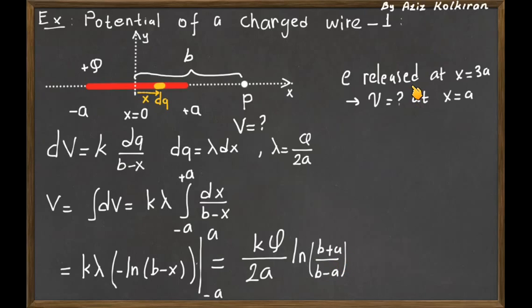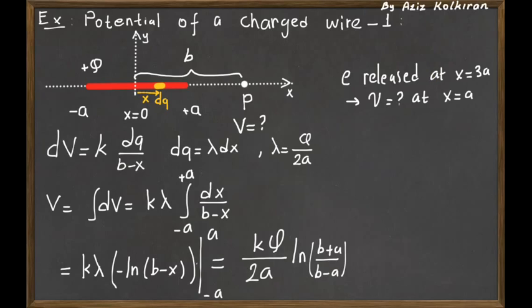The next question is: if we release an electron on the x-axis at x = 3a from rest, what is its speed at x = a? To solve this, we express the potential energy difference between these two endpoints for the electron and equate it to the kinetic energy of the electron using conservation of energy to find its final speed.